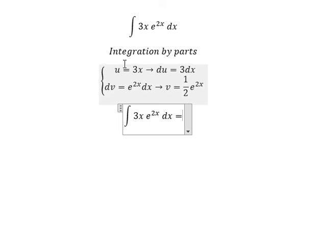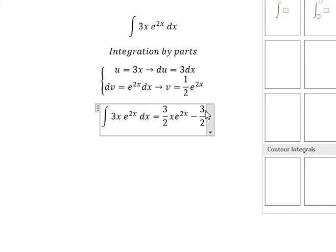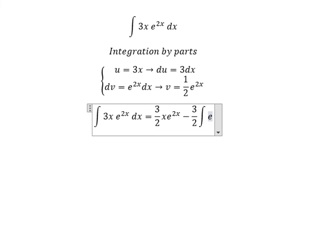So we have u multiplied by v minus the integral of v du. So we have the integration: 3x e^(2x) dx equals (3/2)xe^(2x) minus (3/2) integral of e^(2x) dx.